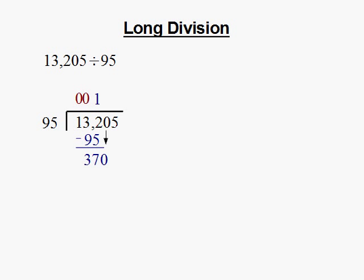We bring down our next number, 0, and apply that to our remainder, 37, which becomes 370. We now divide 95 into 370.